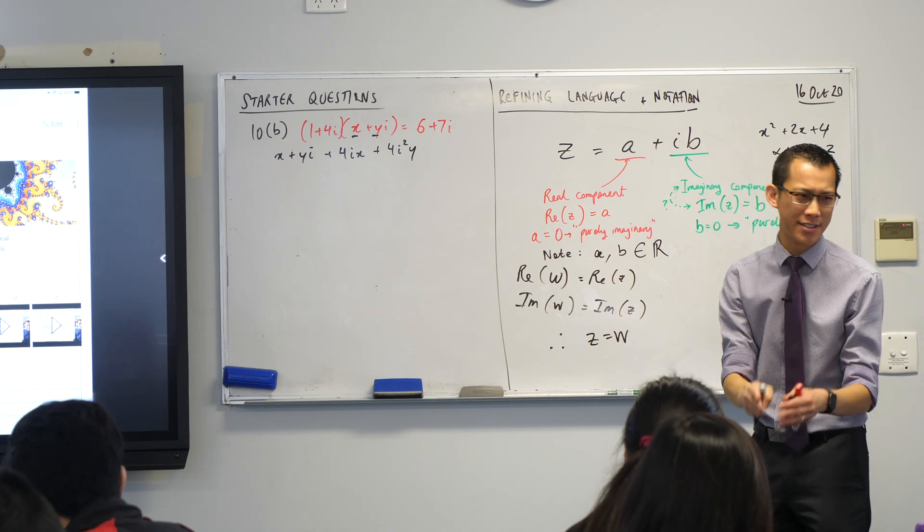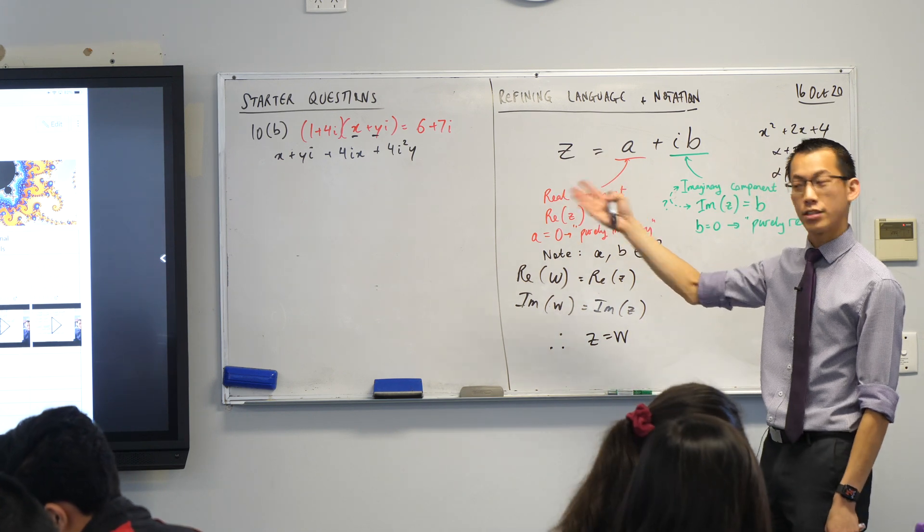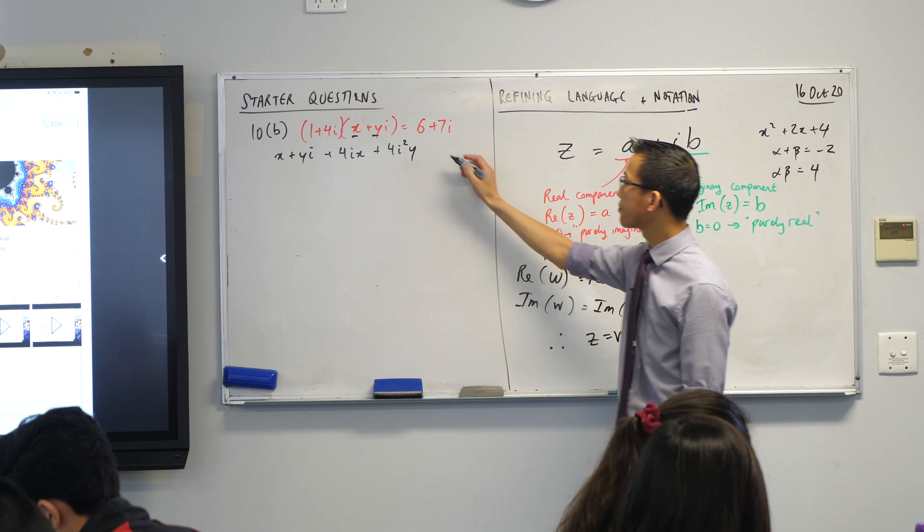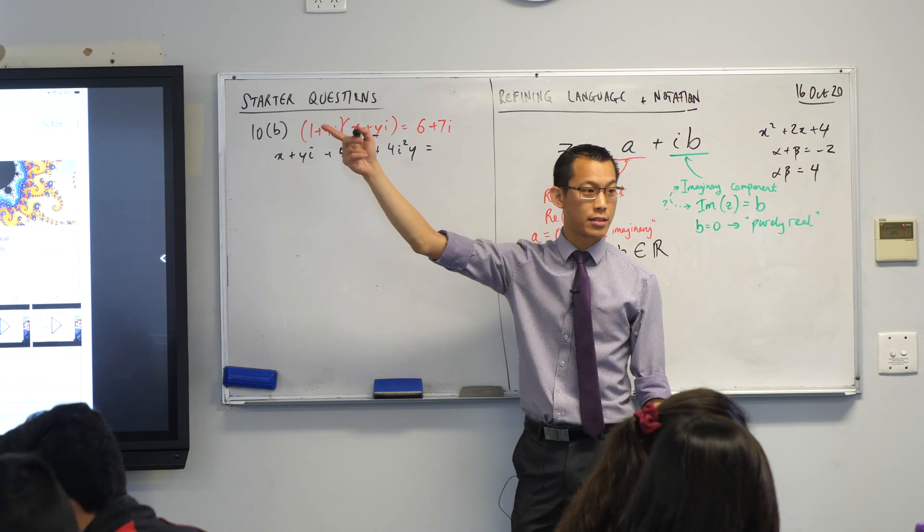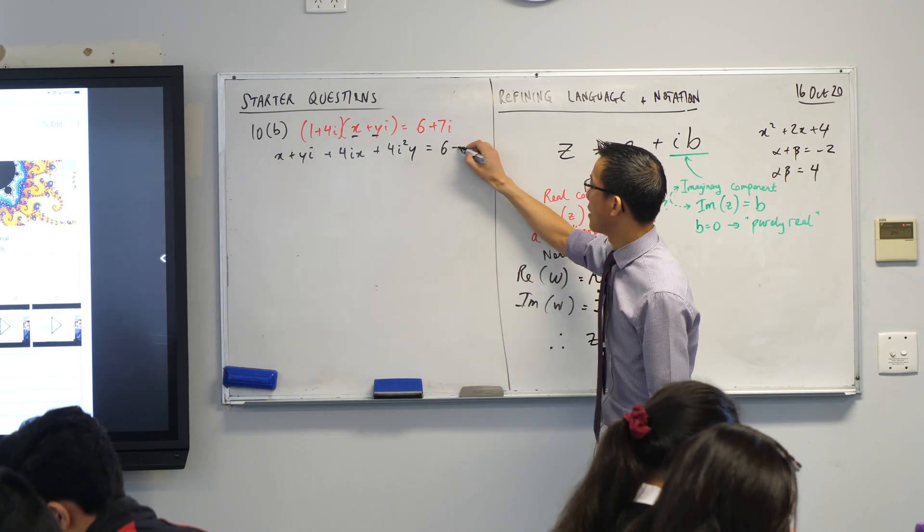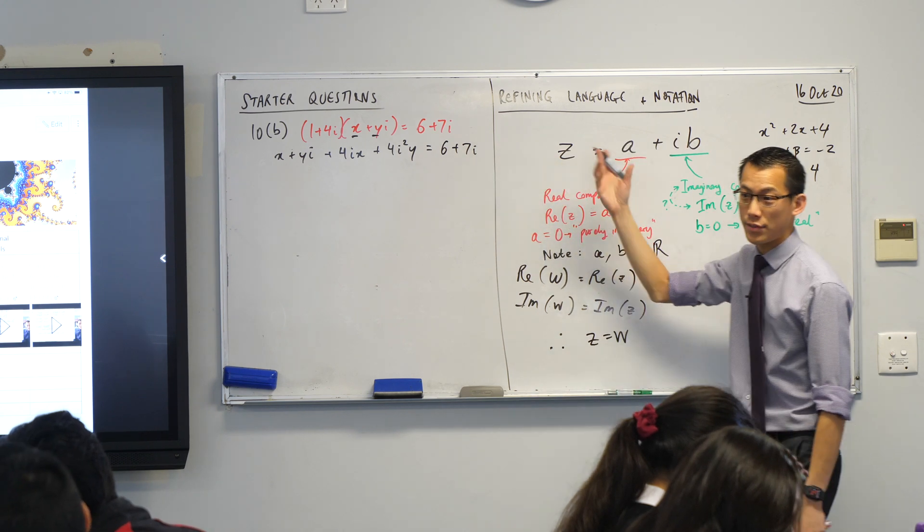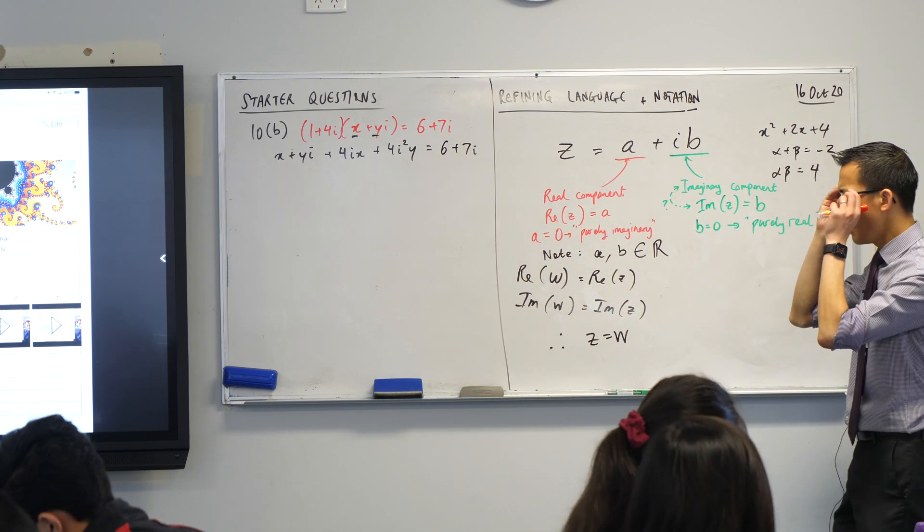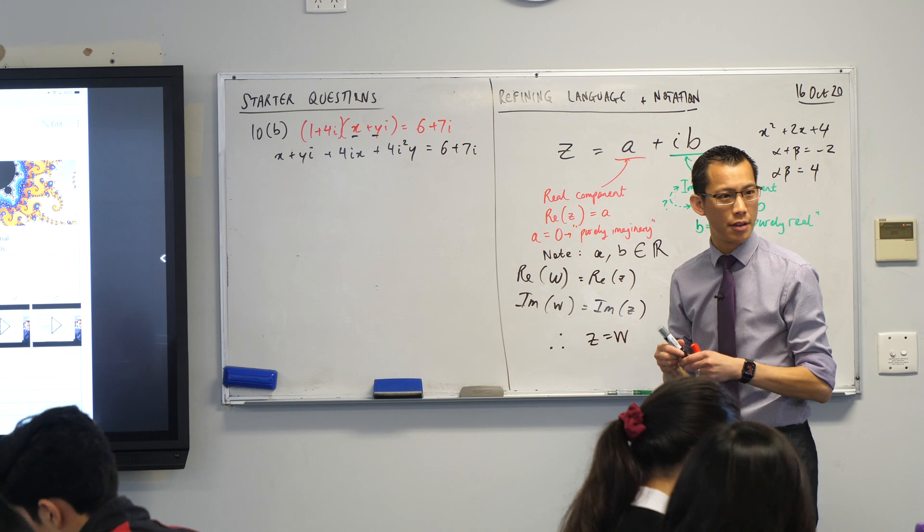But I encourage you, especially on the first line, write i squared anyway. It's a good sort of error checking thing for yourself. So that's the entire left-hand side. Okay with that? And then on the right-hand side, nothing has changed. You just have 6 plus 7i. Now we have tidying up to do on the left-hand side.